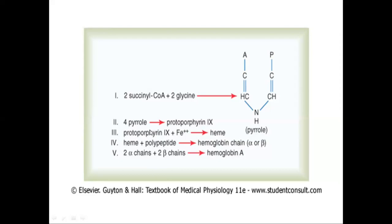Heme then combines with polypeptide chains to form a hemoglobin chain, either alpha or beta. The 2 alpha chains and the 2 beta chains will combine to form hemoglobin A. Hemoglobin A is the adult hemoglobin and is present in almost 92% of adults. This is the structure of the hemoglobin — one heme group contains a single iron atom and each iron atom will combine with oxygen.